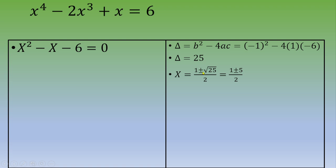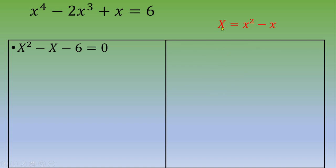Since Δ = 25, capital X has two values: X = (1 ± √25) / 2 = (1 ± 5) / 2. So X = 3 or X = -2. Recall that capital X = x² - x, so now we find the values of x for each case.